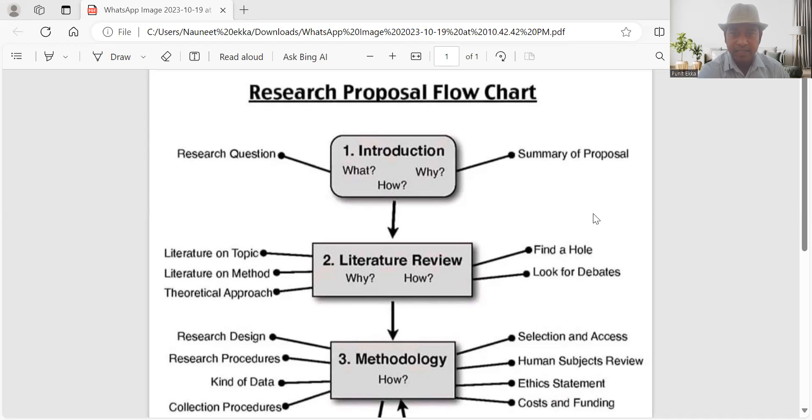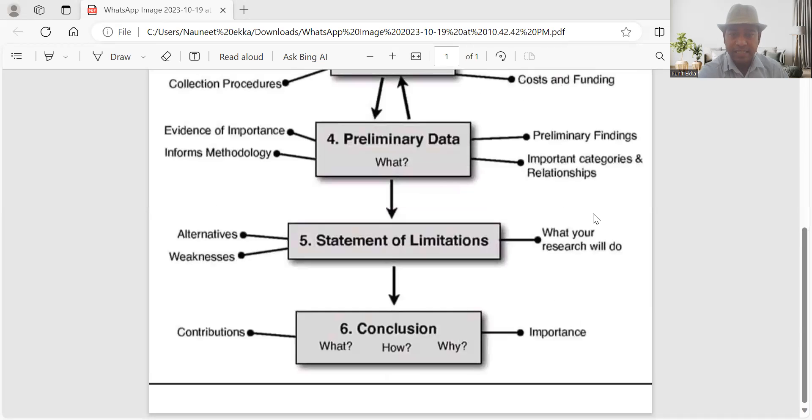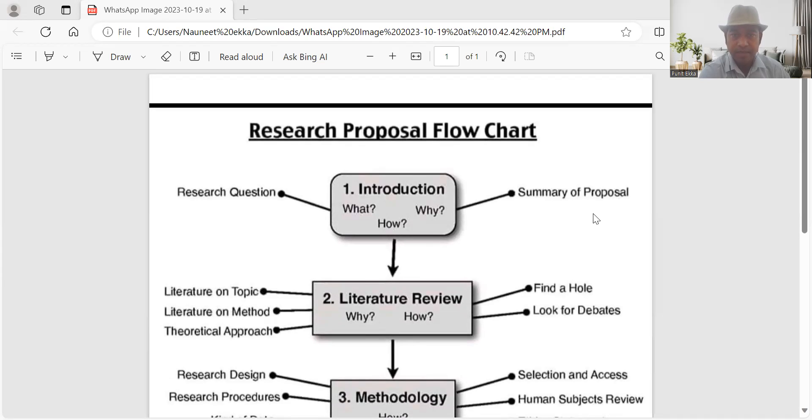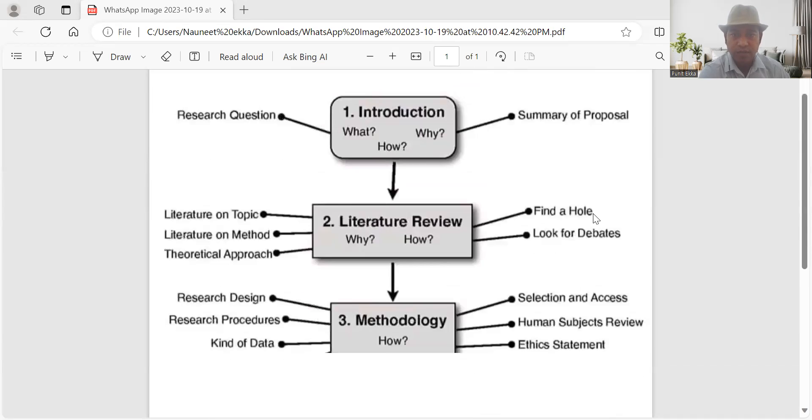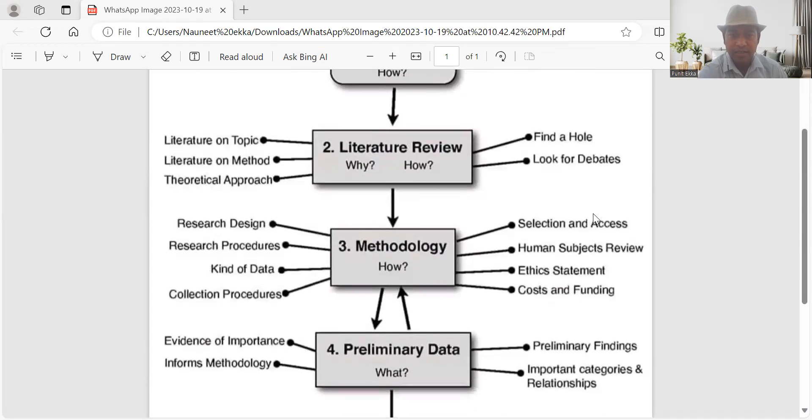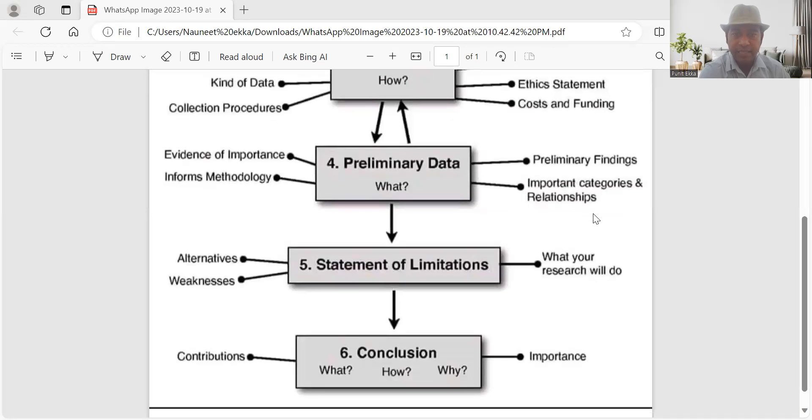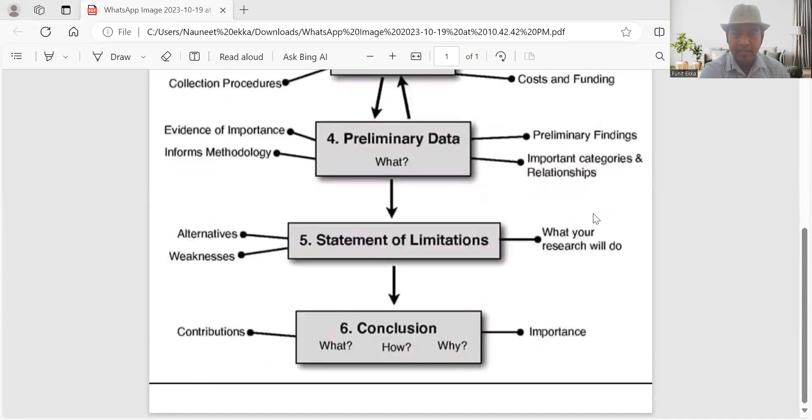Majorly, this flowchart shows there are total six key points: the first one is introduction, second is literature review, third methodology, fourth preliminary data, then fifth statement of limitations, and sixth conclusion.